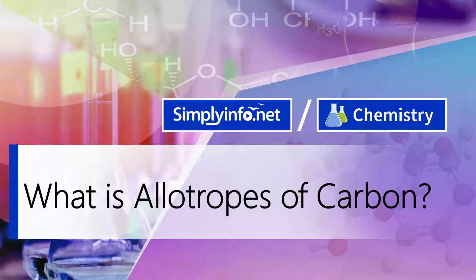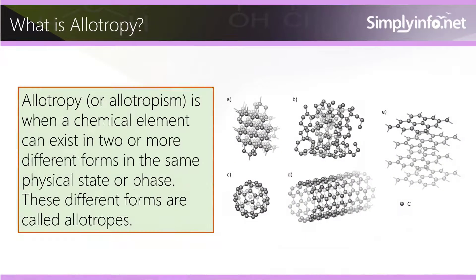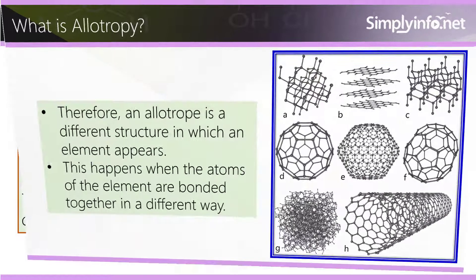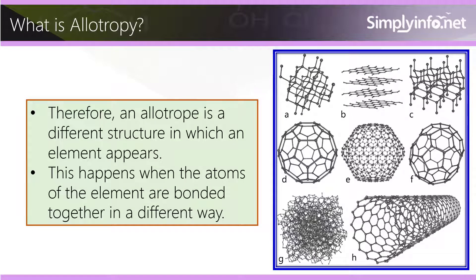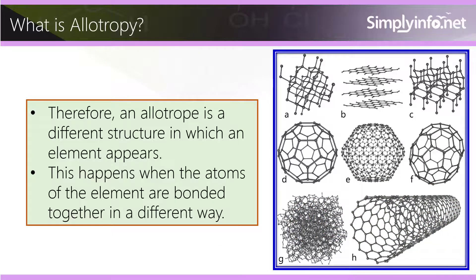What is Allotropes of Carbon? What is Allotrophy? Allotrophy or allotropism is when a chemical element can exist in two or more different forms in the same physical state or phase. These different forms are called allotrophs. Therefore, an allotroph is a different structure in which an element appears. This happens when the atoms of the element are bonded together in a different way.